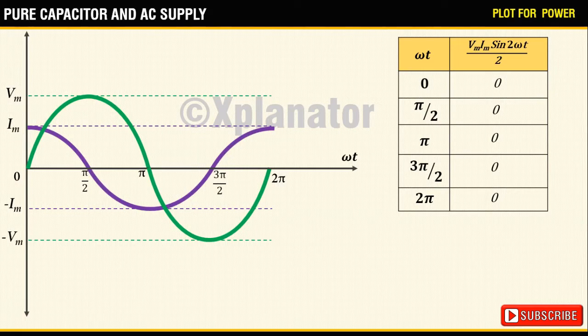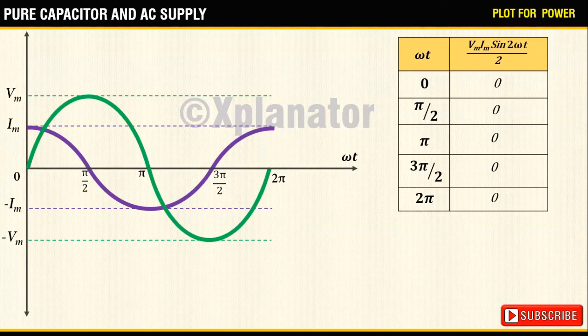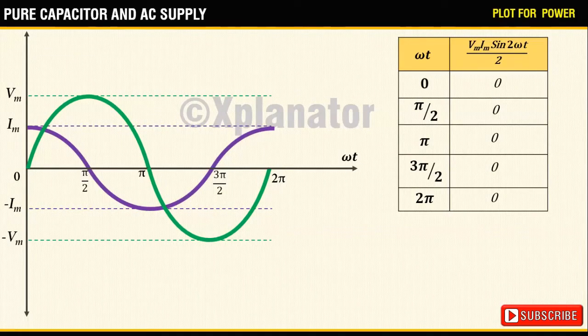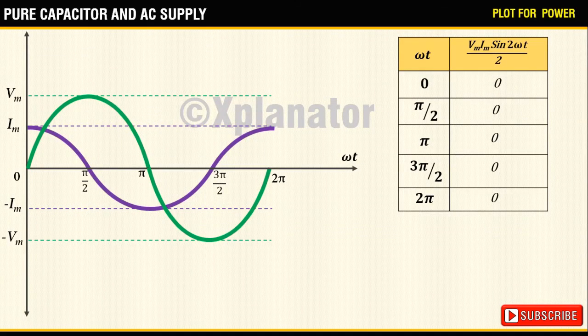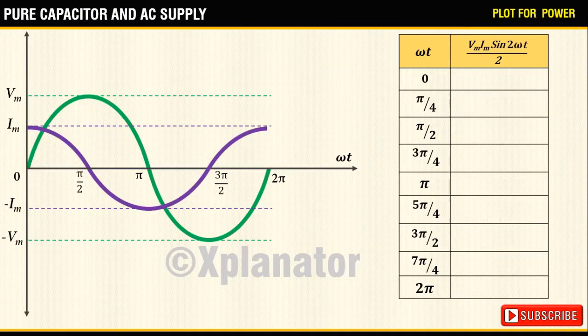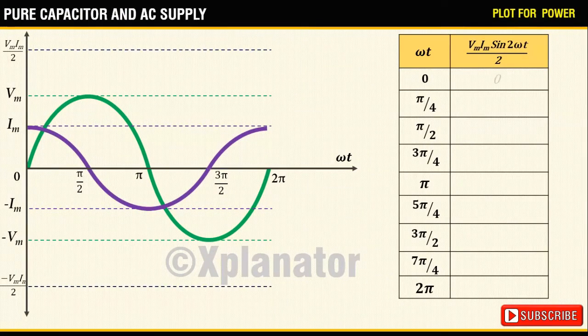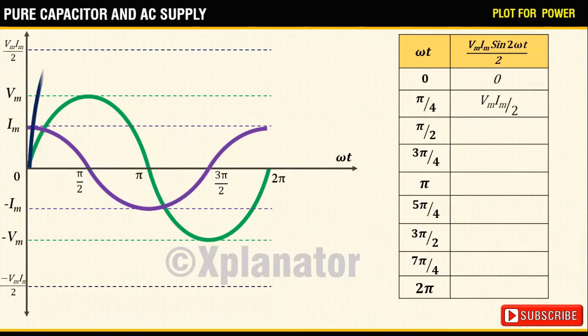So these points are not sufficient to draw the plot and we need to consider more intermediate points. So considering further points and drawing the waveform, you observe that the plot has a symmetric pattern about x-axis.